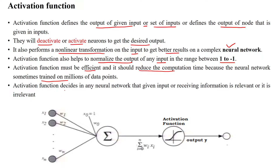The activation function decides in any neural network whether given input or received information is relevant or irrelevant. Based upon the input, it may be relevant or irrelevant.